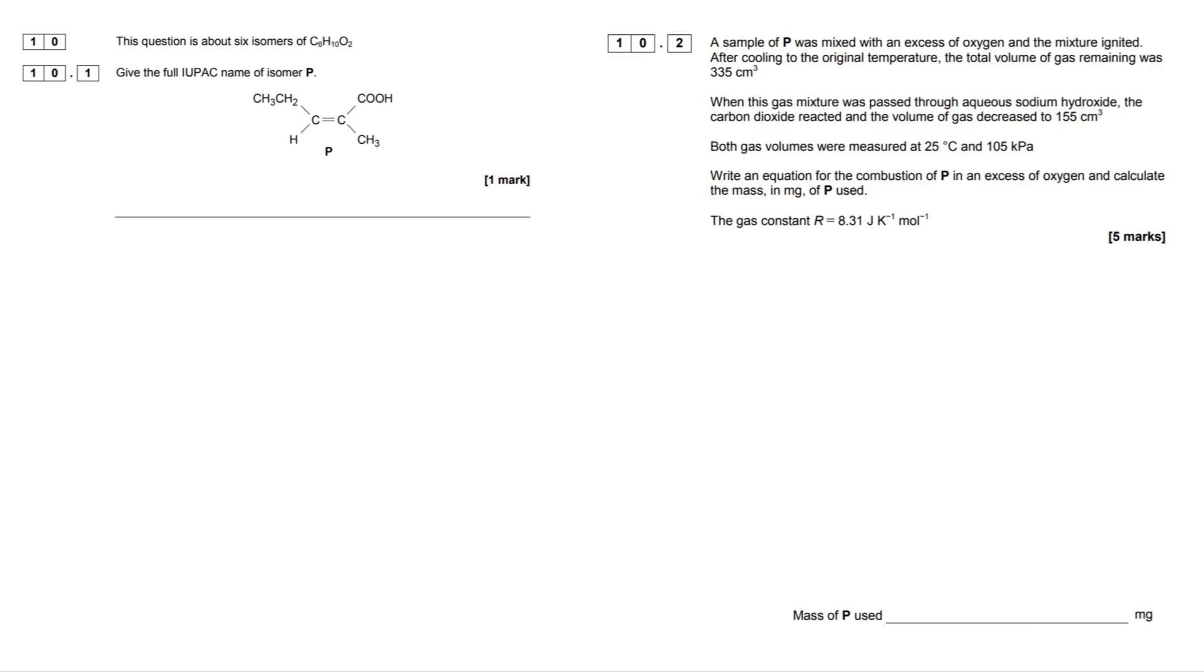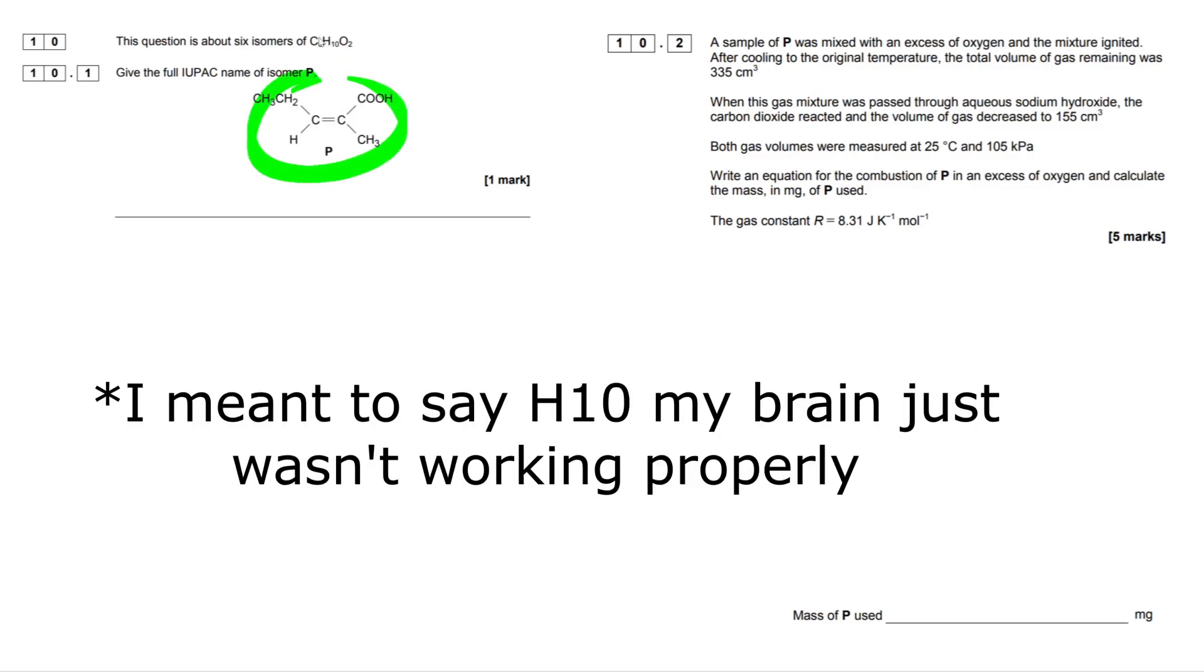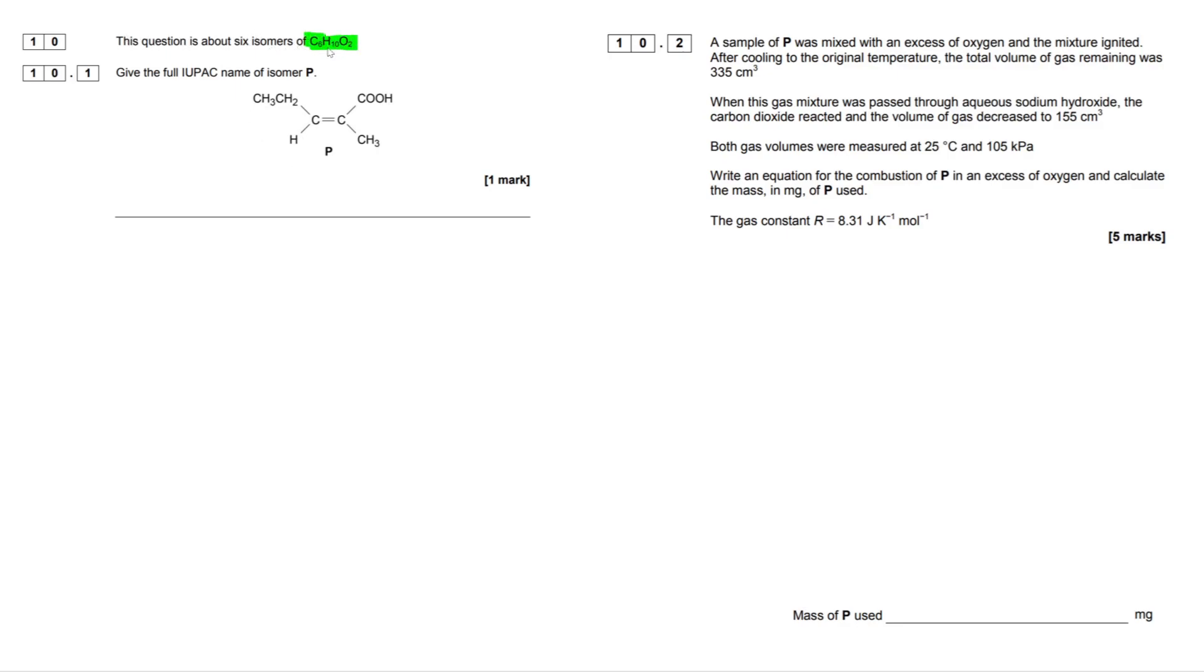Now, here we're actually going to start with a cheeky nomenclature question. What do we have to do here? We have to give the full IUPAC name of Isomer P, so this guy right here, and also they've given us our molecular formula C6H12O2. All right, so what we have to do here is just simply start with counting the longest carbon chain.